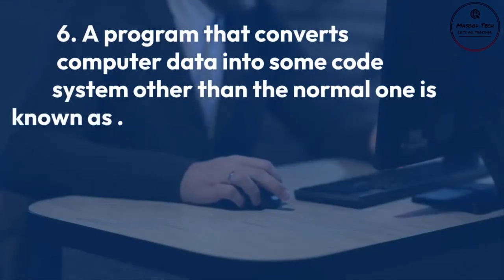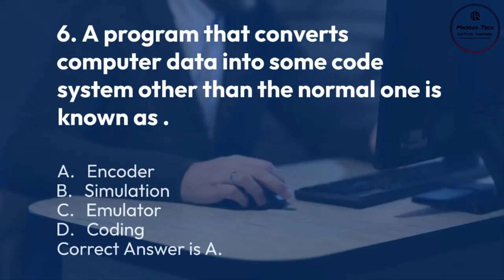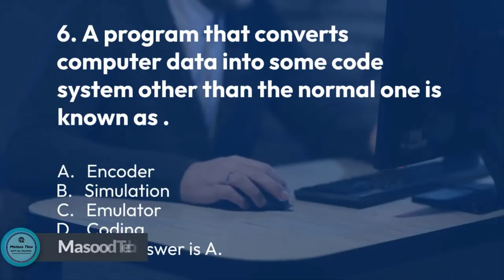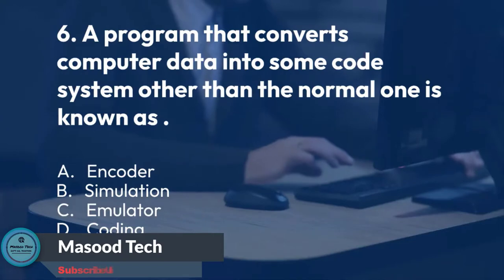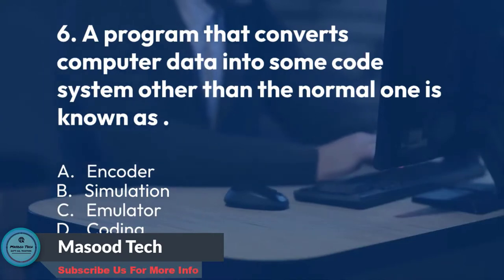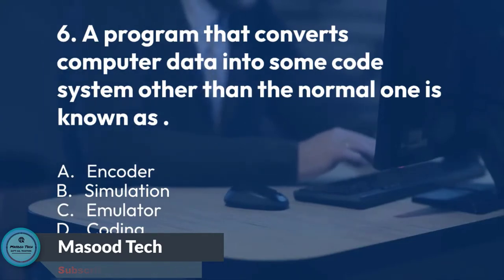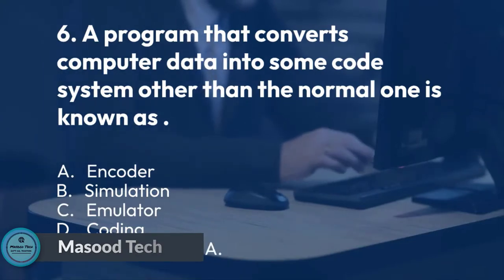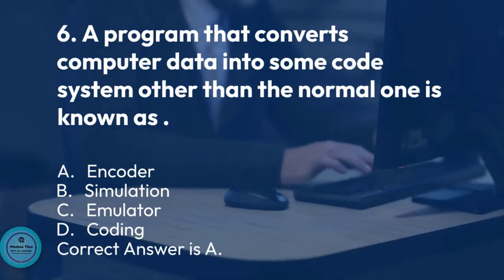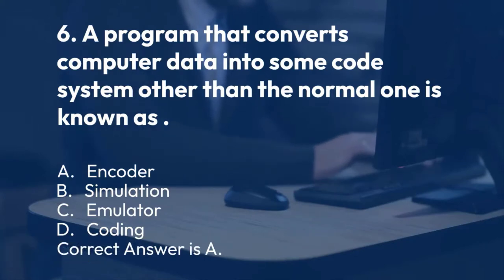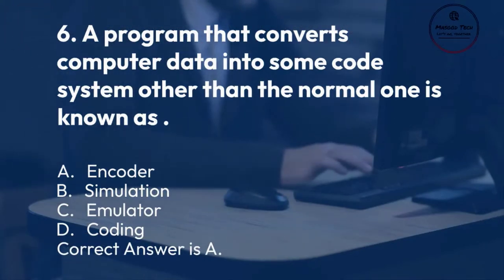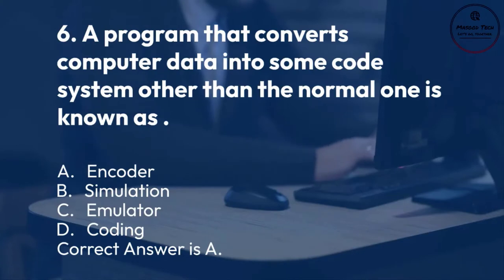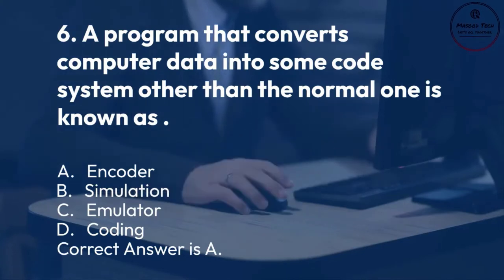Number 6. A program that converts computer data into some code system other than the normal one is known as: A. Encoder. B. Simulation. C. Emulator. D. Coding. Correct answer is A.